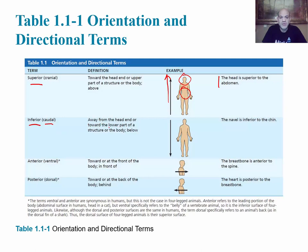An example of inferior: the navel or belly button is inferior to the chin. Next, we have another pair of terms — anterior and posterior. In humans, we can also use ventral to mean anterior and dorsal to mean posterior.